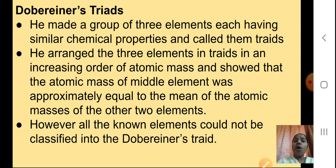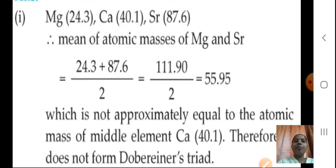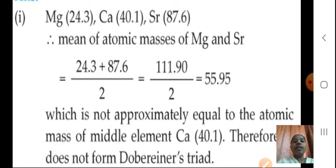However, all the known elements could not be classified into Dobereiner's triad — we cannot apply it for all the elements, so his theory was not accepted. For example, here you can see magnesium (24.3 atomic mass), calcium, and strontium. The mean atomic mass of magnesium and strontium is 55.95, which is not approximately equal to the atomic mass of the middle element, calcium, which is 40.1.